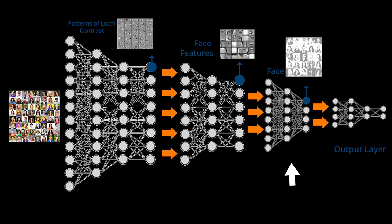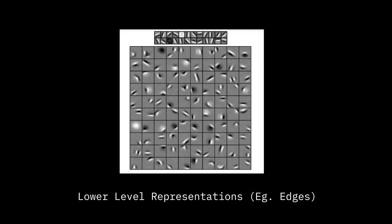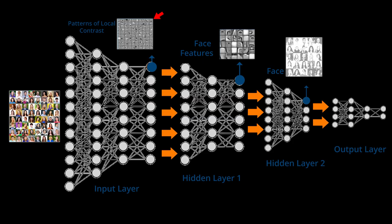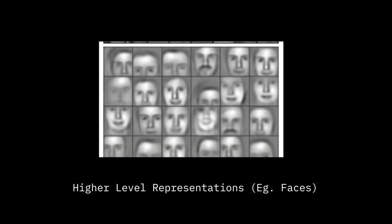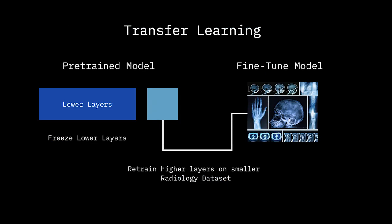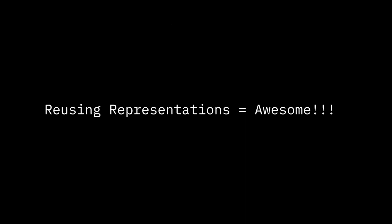Knowledge on the higher layers builds on top of the layers below. The lower layers learn things like edge detection or lower-level representations. Middle layers learn intermediate representations, and as you get higher, you start learning the specific semantics of your task. So for transfer learning, all you have to do is use the lower layers of the pre-trained model — which was trained on the big labeled dataset — and then retrain or fine-tune the higher layers only using your 100 radiology images. Reusing representations of data is an awesome approach.